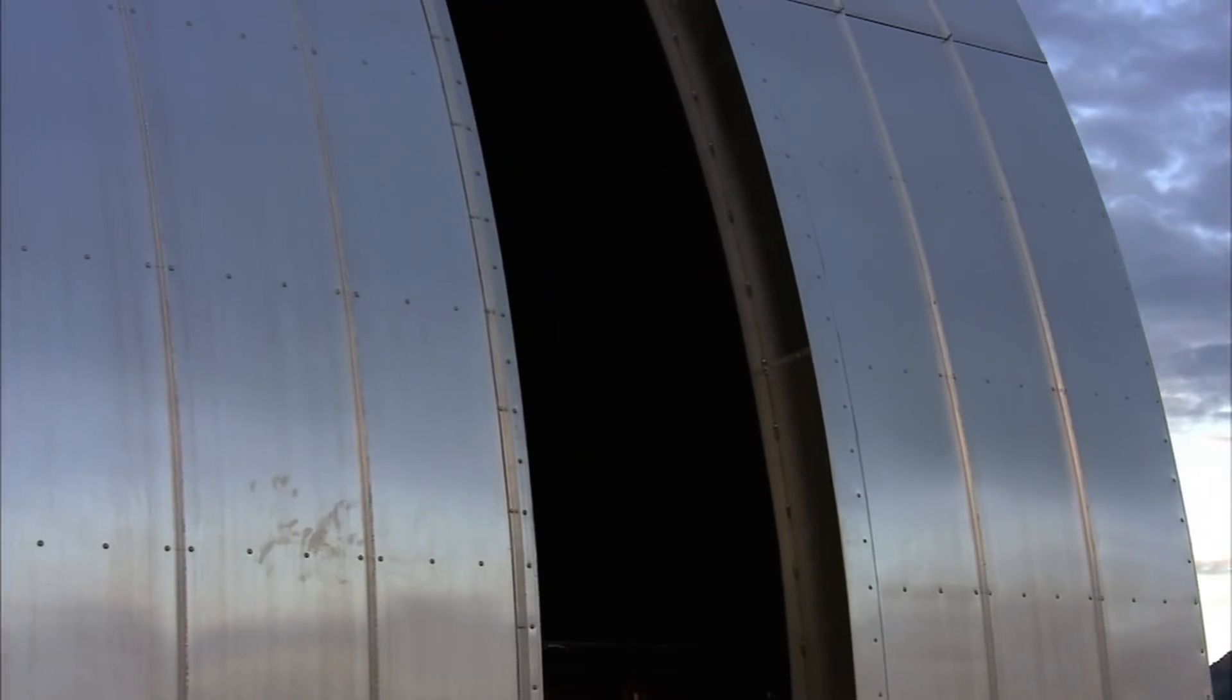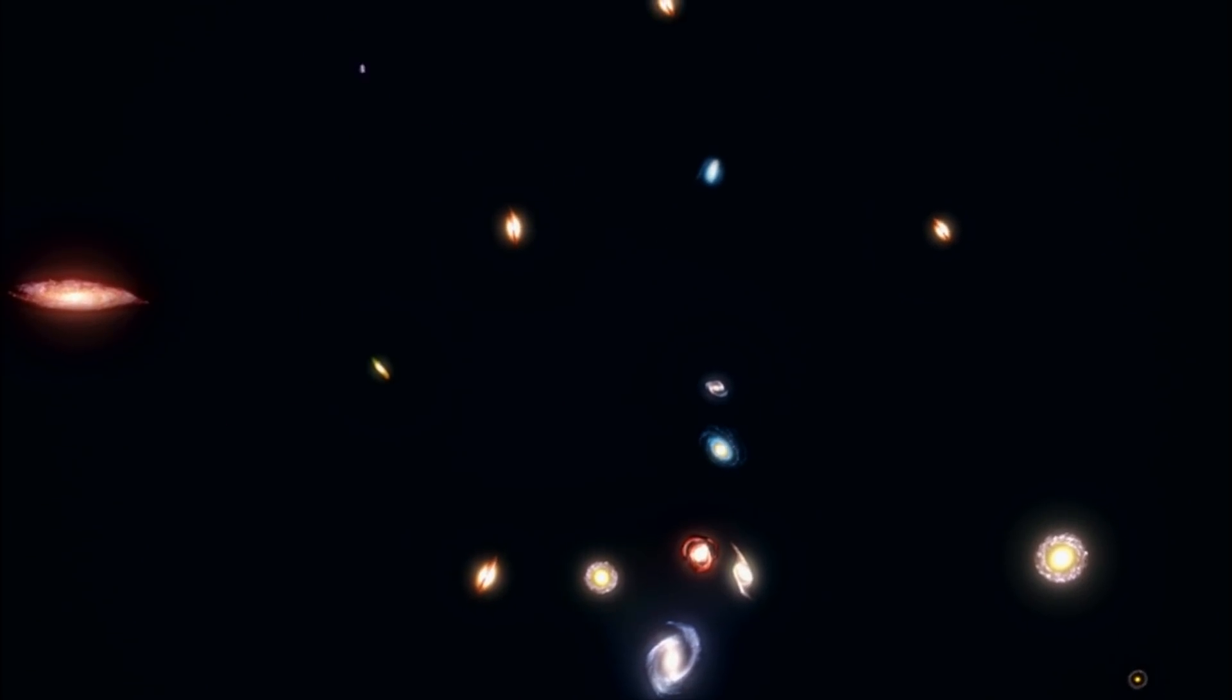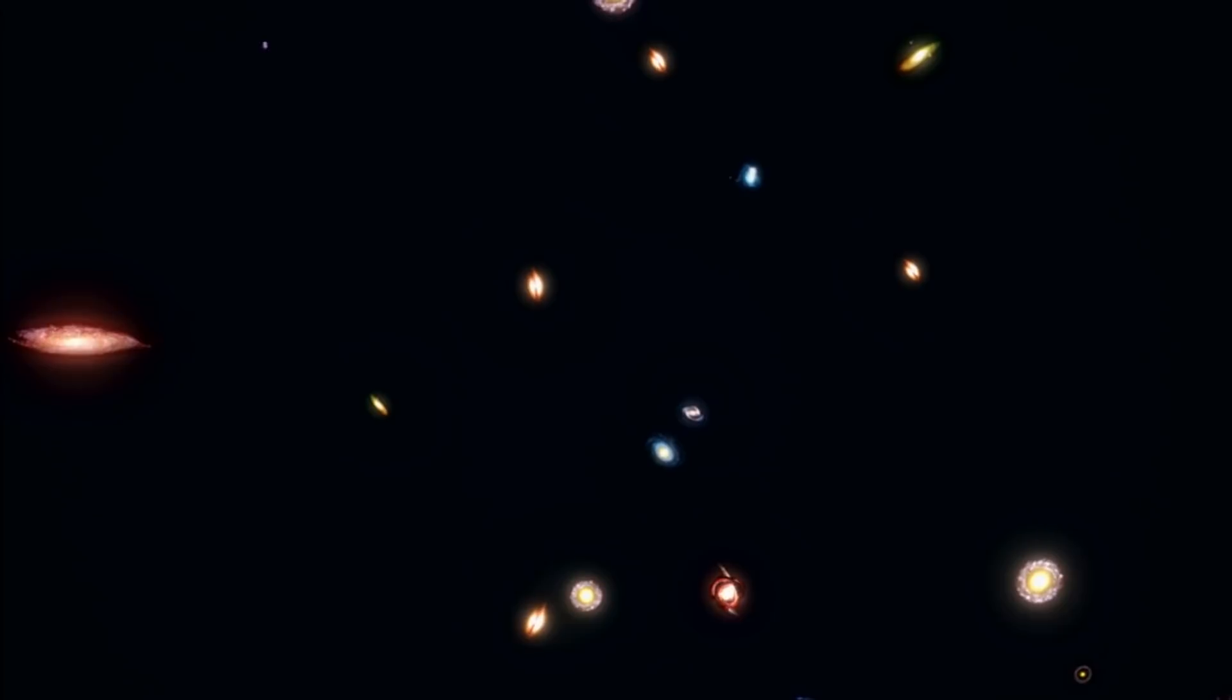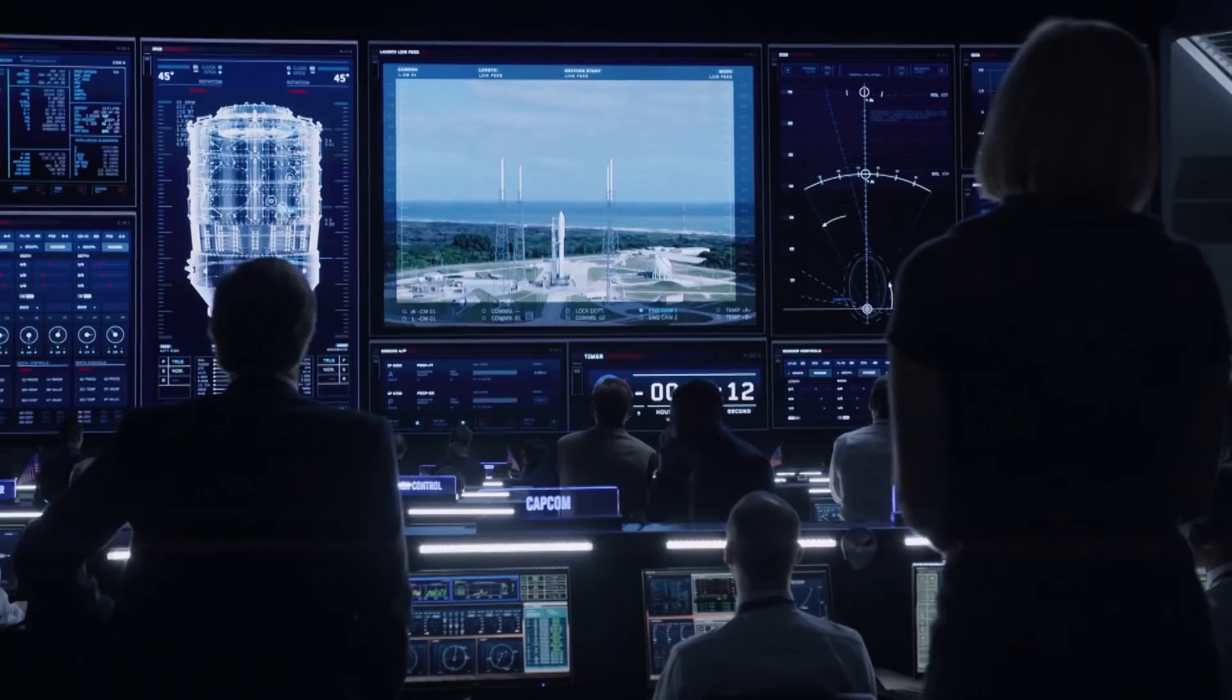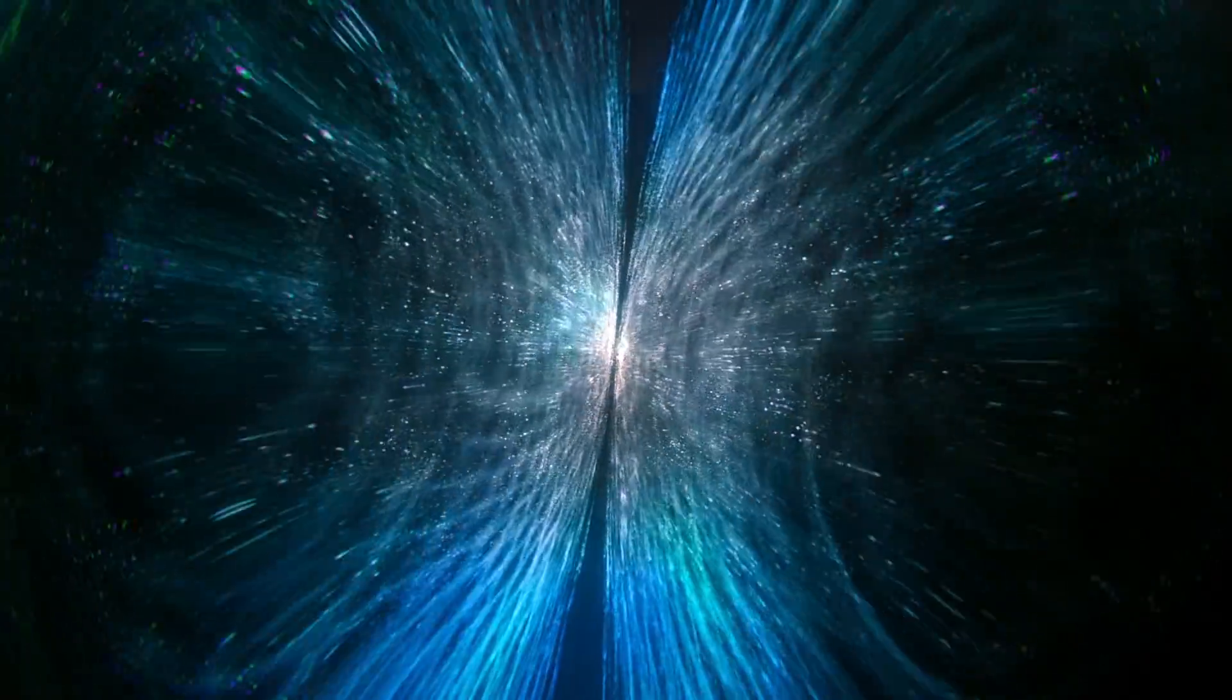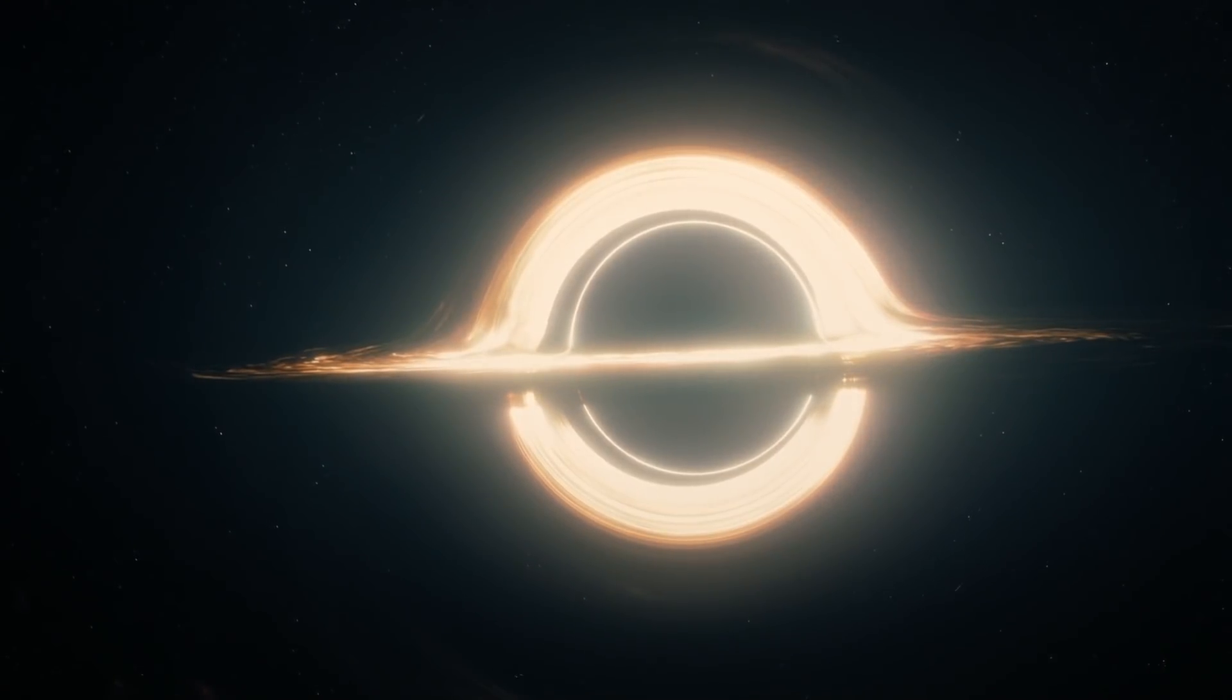Another theory deals with something called dark flow. In 2008, astronomers discovered something very strange and unexpected. Galactic clusters were all streaming in the same direction at immense speed, over 2 million miles per hour. Scientists believed that it might be because of the gravitational pull of something massive, something huge, something big enough to pull galaxies to its own mass.